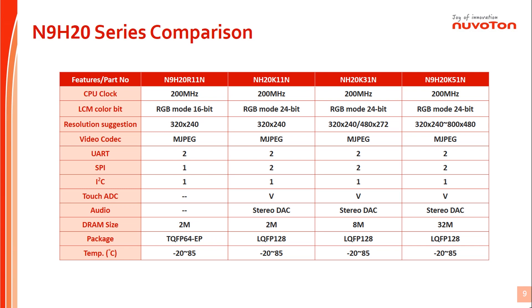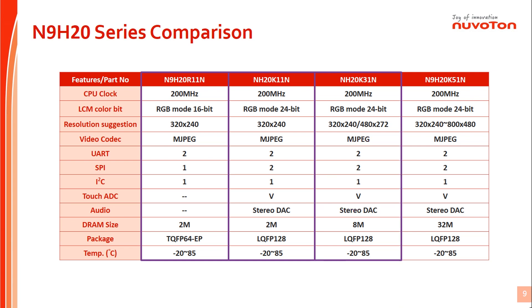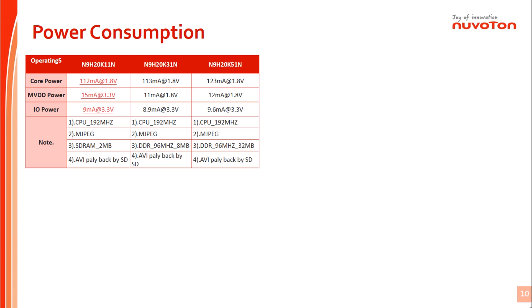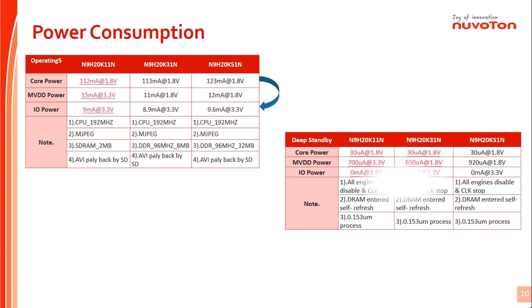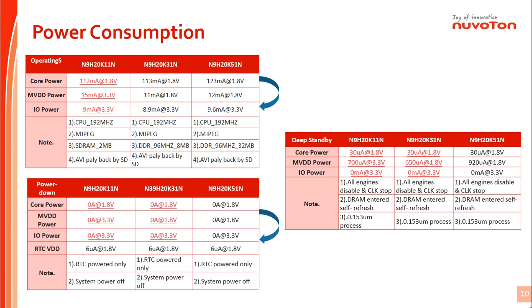This slide shows the N9H20 series comparison table. From this table, we can get key features information for N9H20R11N, N9H20K11N, N9H20K31N, and N9H20K51N and compare the differences. The diagram also shows N9H20 series power consumption: N9H20 core power will be 110 mA to 120 mA in operating mode, down to around 30 mA in deep standby mode, and zero at power down mode — with only RTC power at 6 mA remaining alive.